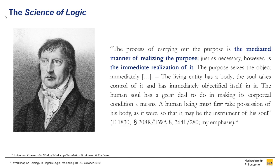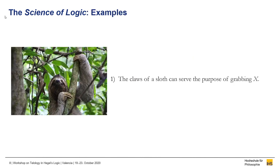Hegel distinguishes here two ways of realizing a purpose: a mediated and an immediate one. He illustrates the immediate one by the example of the soul of a living entity taking control over its body. In this example, the body is used as an instrument or means. The body parts are hence interpreted by their functionality or aptness for a certain purpose. For example, the claws of a sloth can serve the purpose of grabbing something. It seems, therefore, that Hegel had in mind the functional interpretation of body parts when he wrote about a subjective purpose seizing an object immediately.